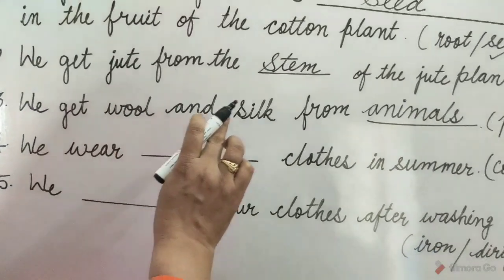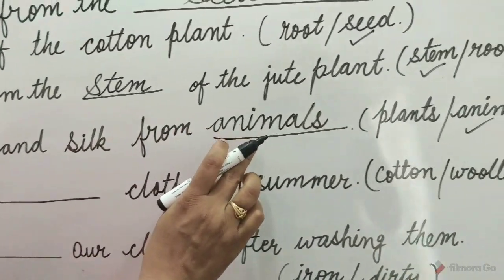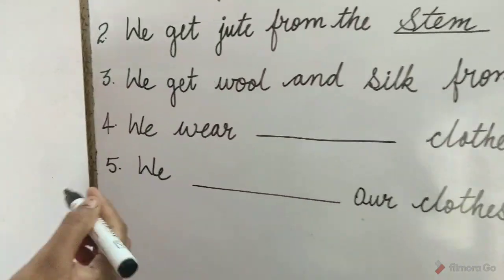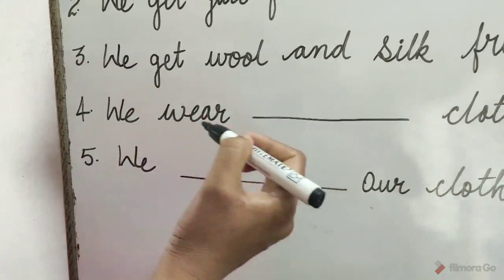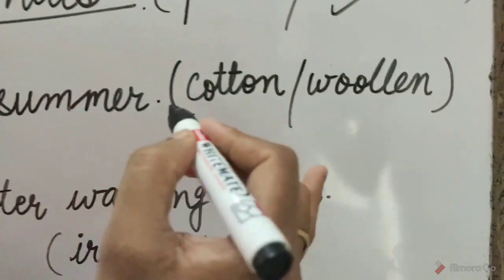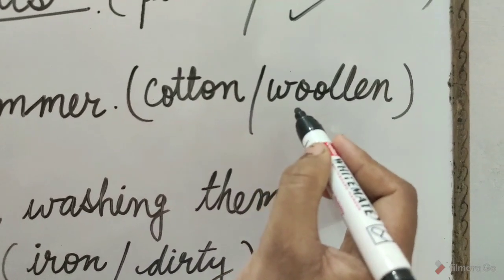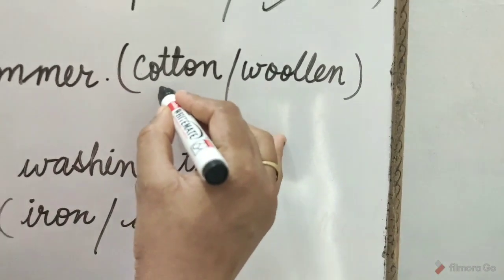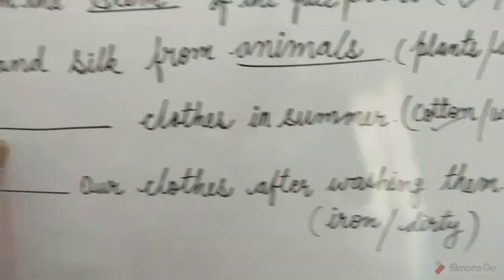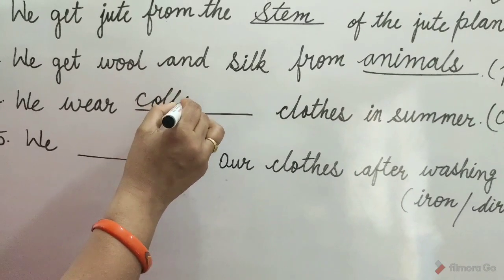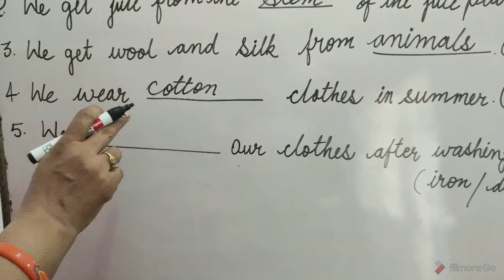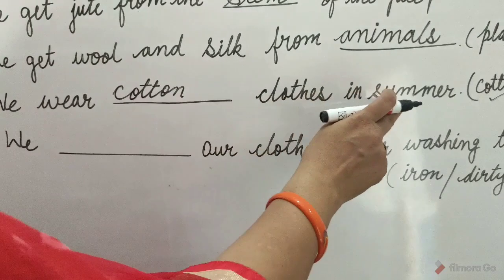4. We wear blank clothes in summer. The options are cotton and woolen. Cotton is the correct option. We wear cotton clothes in summer.